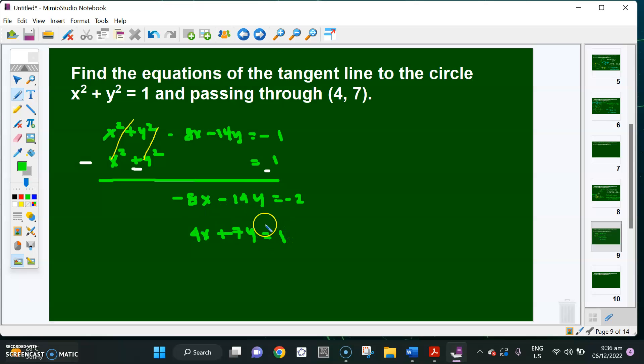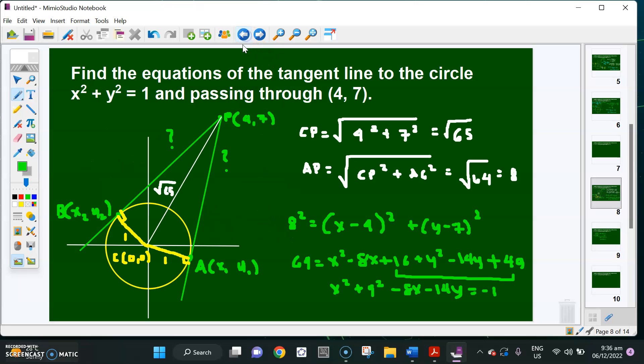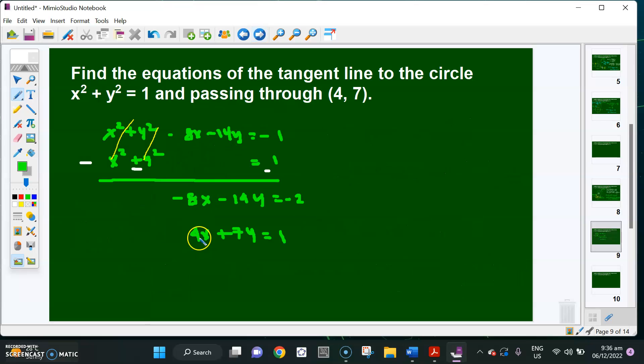Now remember, our target is to get the value of x and y so that we have the coordinates. We can then get the equation. For us to do that, we have to solve x in terms of y or y in terms of x. In this case, let me solve for x. That will give me x equals (1 minus 7y) over 4.